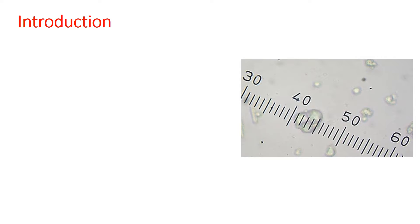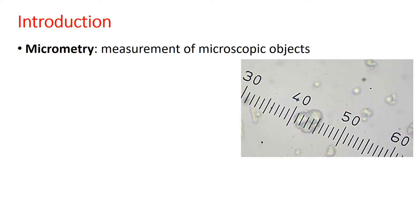Before moving on to the detailed practical, we'll have a brief introduction as to why this practical is important. This kind of practical, wherein we are measuring the size of microscopic objects, is called micrometry. Because the objects are microscopic, we use a microscopic scale to determine the mean diameter, length, or width.